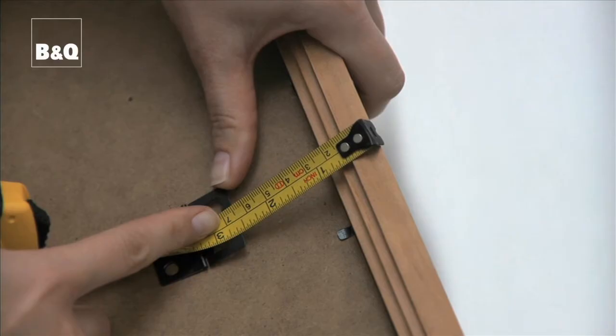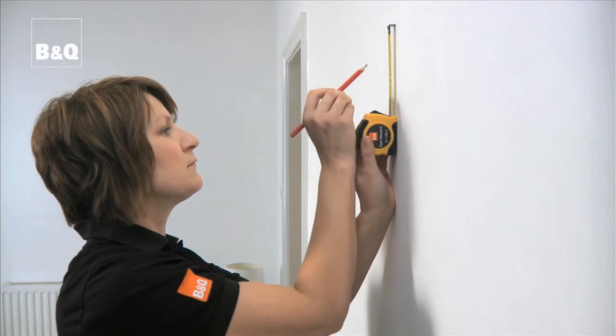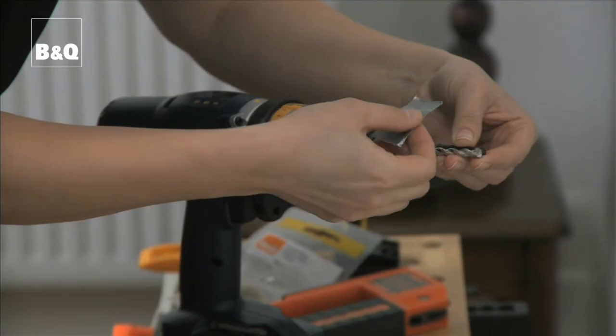Measure the distance between the top and the hanging point of the frame. Then mark this hanging point on the wall, but make sure it's slightly less so that your top pencil mark will be covered up.